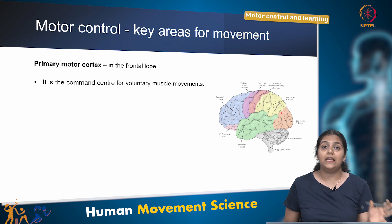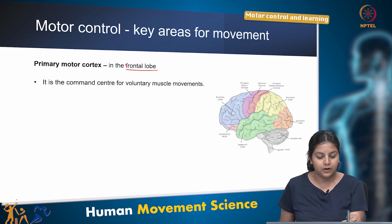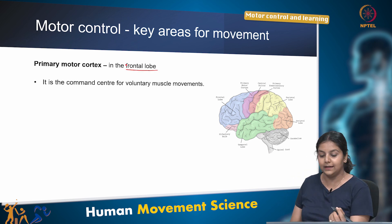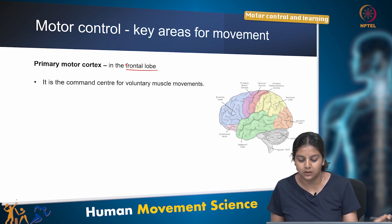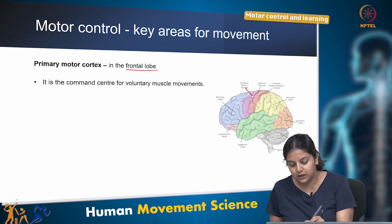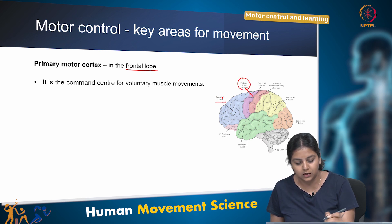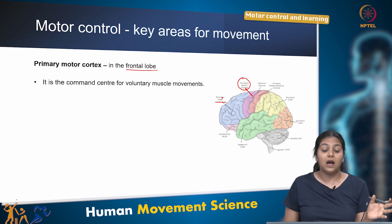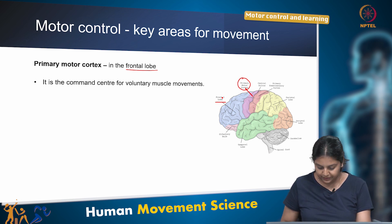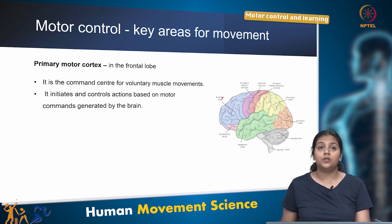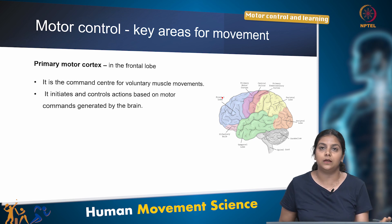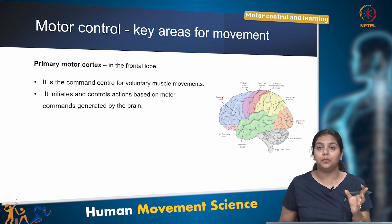The primary motor cortex is located in the frontal lobe, as you can see in the diagram here. It is the command center for voluntary muscle movements — it initiates and controls actions based on motor commands generated by the brain. How those commands are generated and processed will be covered in the next few slides.